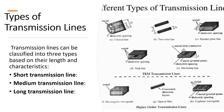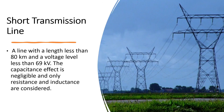Transmission lines can be classified into three types based on their length and characteristics: short, medium, and long transmission lines. A line with a length less than 80 km and a voltage level less than 69 kV is called a short transmission line. The capacitance effect is negligible and only resistance and inductance are considered.